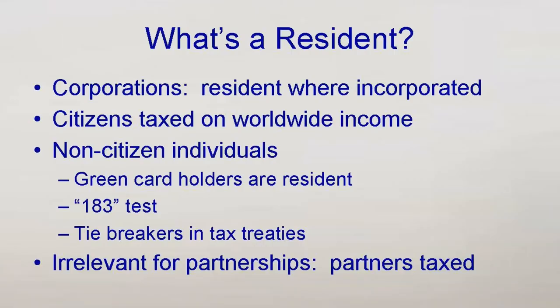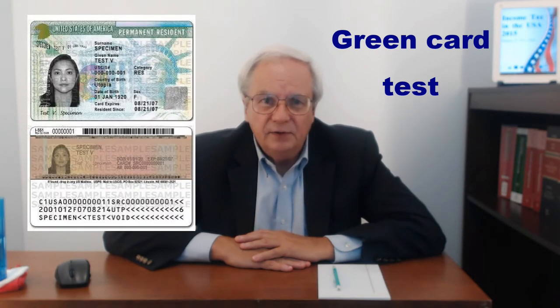There are two tests, and meeting either one results in residence. Anyone holding a permanent resident permit, called a green card, is treated as a U.S. resident until they give up the green card. Anyone else must count their days in the U.S. each year. If they are in the U.S. 30 days or more, they are potentially resident under the 183 test.